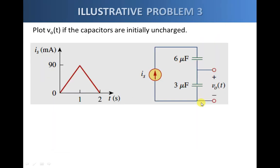In our third example, we have two capacitors — six microfarads and three microfarads — connected in series. The current flowing towards the series combination is defined by a given graph, and we are asked to find the voltage across the three microfarad capacitor.